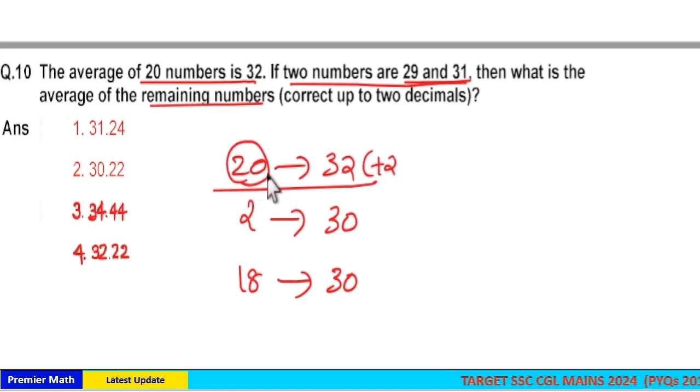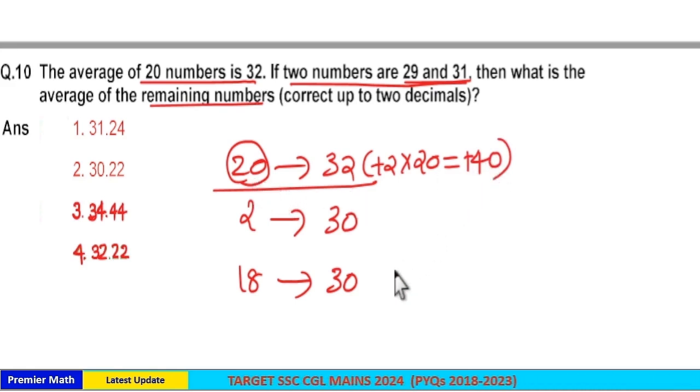So plus 2 into 20 is 40. So this plus 40 is the increment and the sum for this 20 numbers. So this extra sum should be equally distributed to this remaining 18 numbers in order to balance the total average as 32.